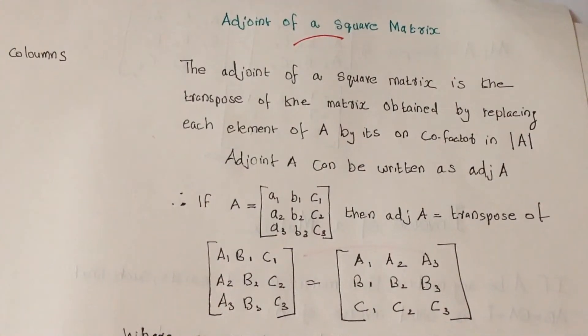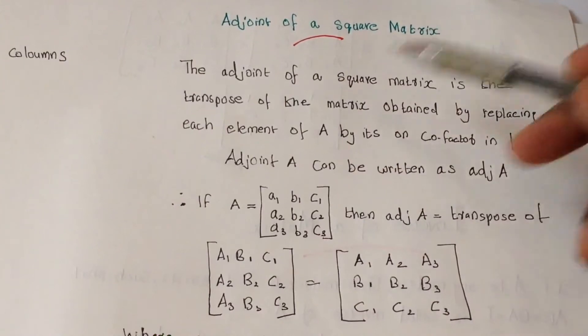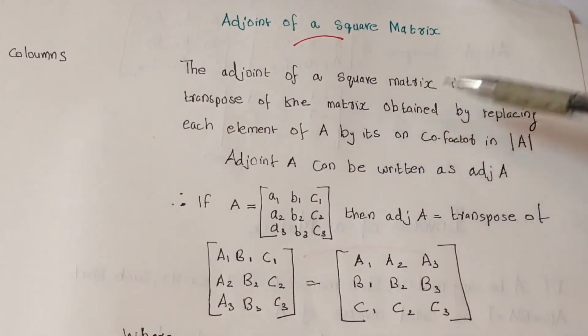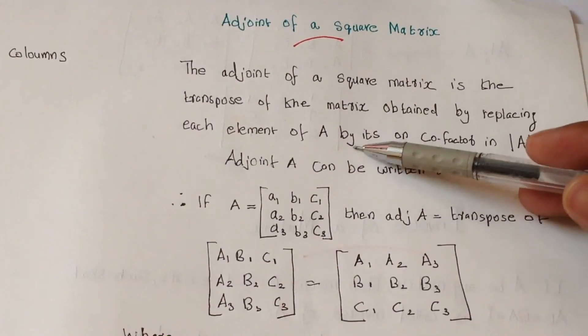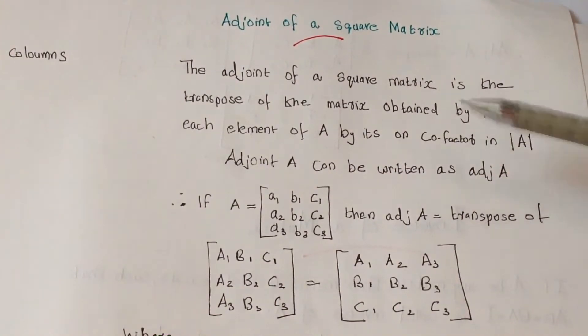Hi folks, welcome to my video on adjoint of a square matrix. The adjoint of a square matrix is the transpose of the matrix obtained by replacing each element of A by its own cofactor in determinant A.